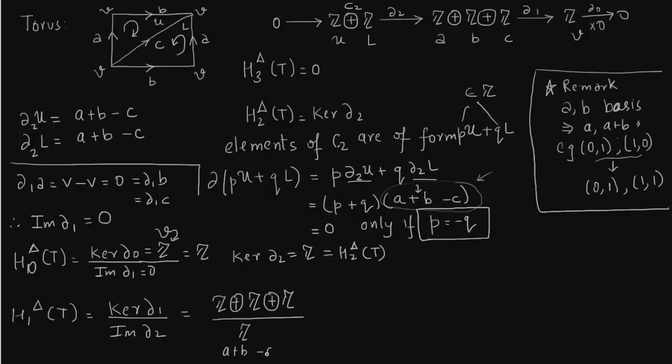Now we've already seen that image of delta_2 is generated by a + b - c, because it always will give you p + q times (a+b-c). So this I will write as a, b, change of basis, a+b-c. The modular terms cancel out.